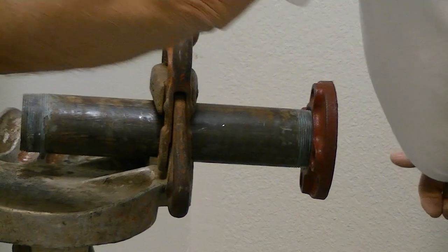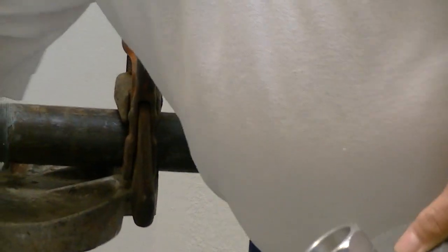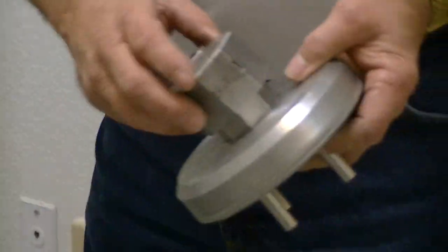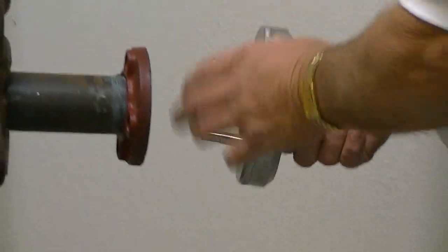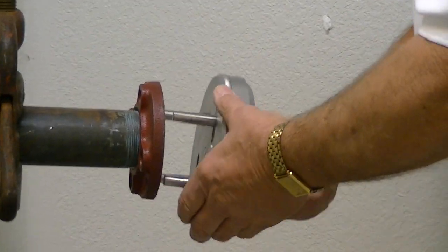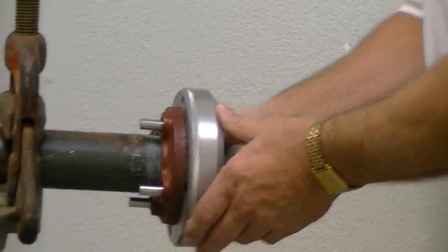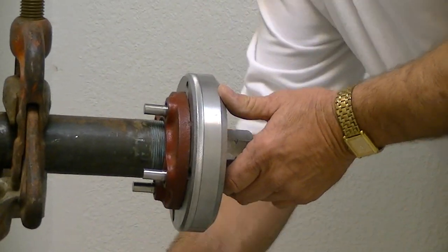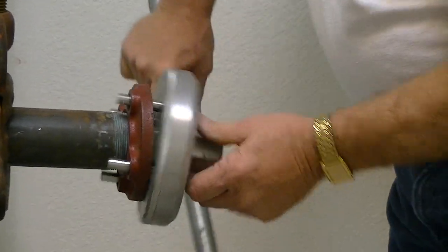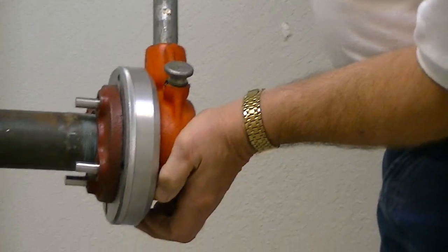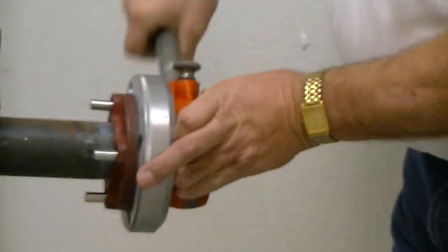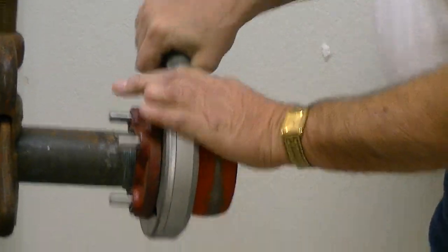Now, for this one here, I can still use the same adapter with the 24-inch pipe wrench. But it's probably going to be a little easier. Slide that on there. Put the R-12 out. There you go. It goes on pretty easy.